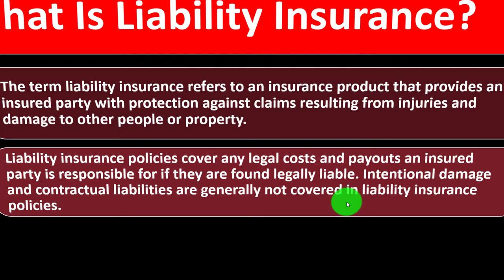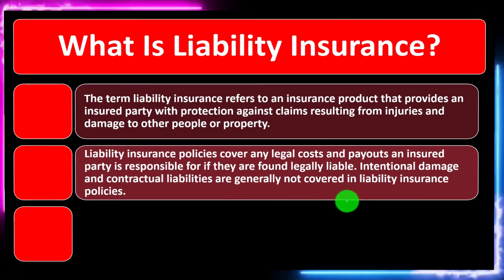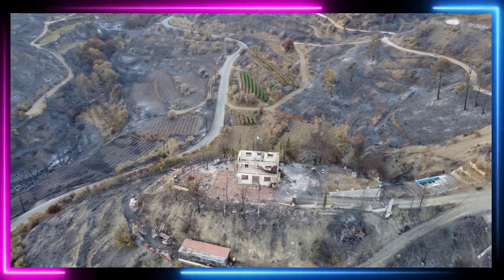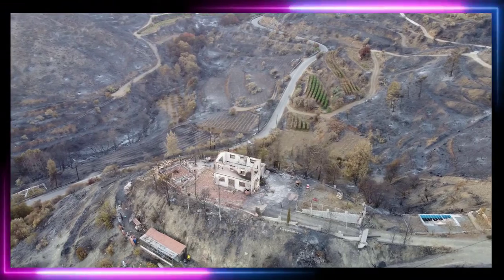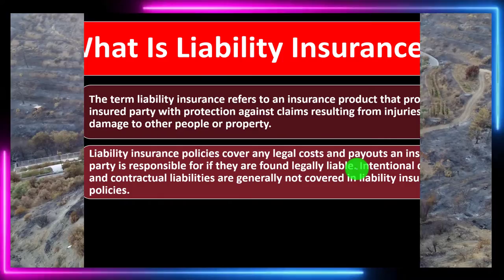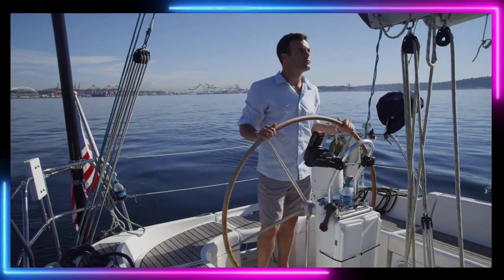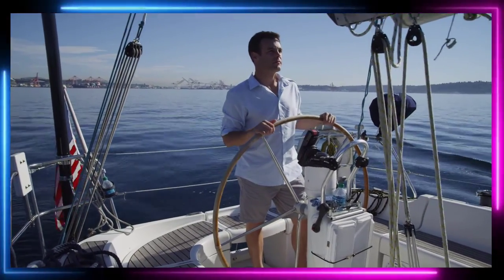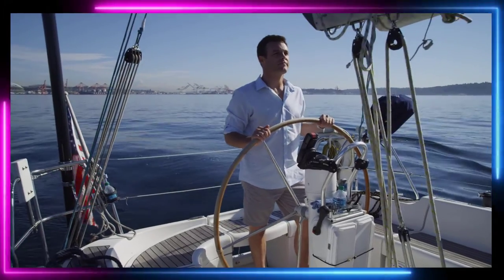Liability insurance policies cover any legal costs and payouts an insured party is responsible for if they are found legally liable. So if someone else suffers harm caused by the insured party and that person is found responsible, liability insurance kicks in. Intentional damage and contractual liabilities are generally not covered — the coverage applies to unintentional damage for which you are still found responsible.